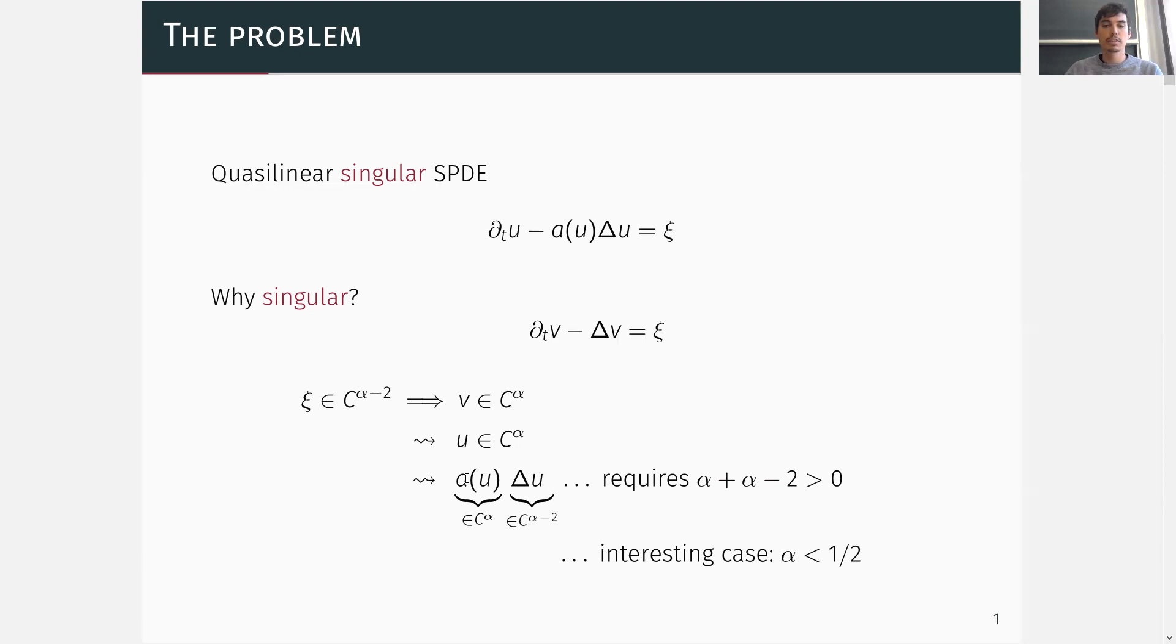Then, under some mild assumptions on the non-linearity, also a composed with u lives in C^α and Δu again in C^(α-2). Hence, for this product to make sense, we need that the sum of these two exponents is positive, which is equivalent to α being larger than one.